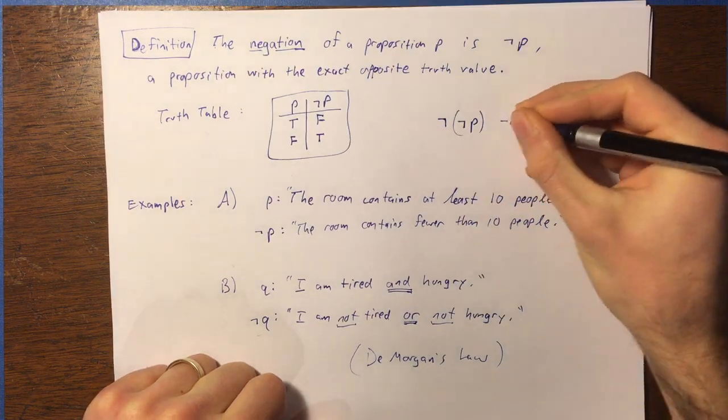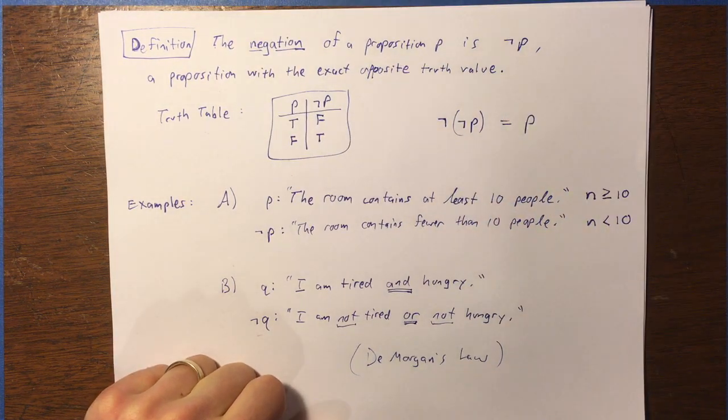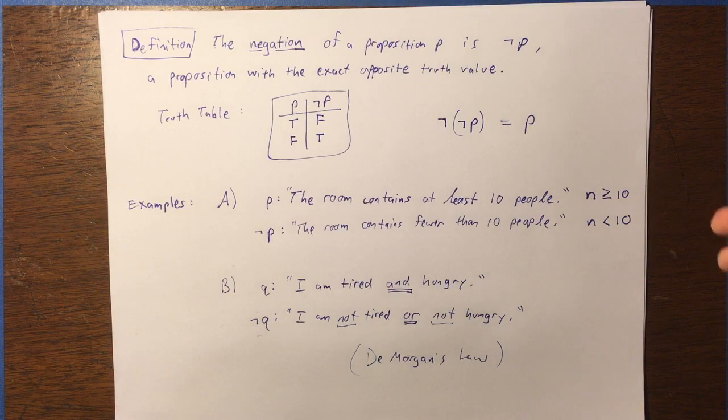Negation is really analogous to negative in the algebra of real numbers. So, if you take a number and you make it negative, and then you take that number and you make that negative, the double negative cancels out, right? And you get back to the original number you started with.